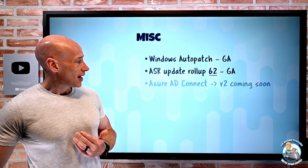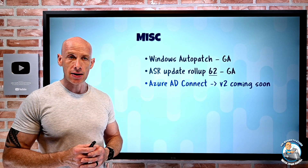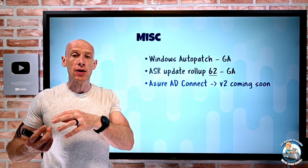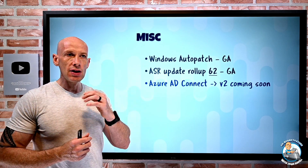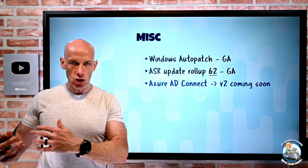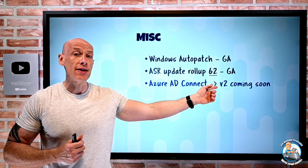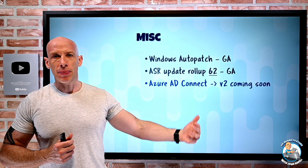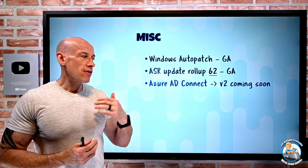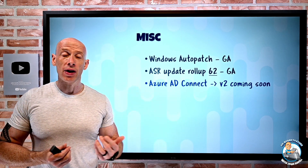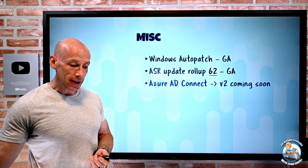Finally, just be aware: for a while now, a V2 version of Azure AD Connect has been available — the on-premises engine to synchronize from Active Directory Domain Services to Azure AD. V2 made changes to the endpoints used, the engine, the SQL version, and supported OS. The auto-upgrade to V2 is going to start happening soon. Up to this point it's been optional, but now it will automatically start rolling out. It does require Windows Server 2016 or above to run the Azure AD Connect engine, so just be aware that is coming.